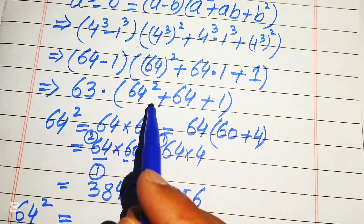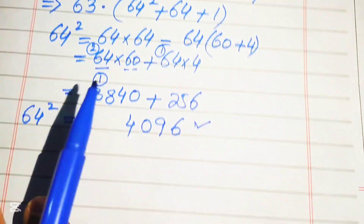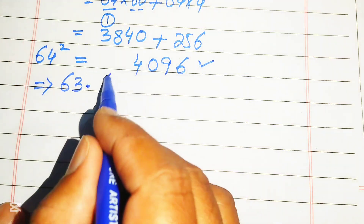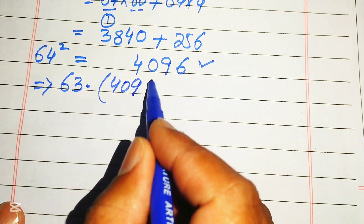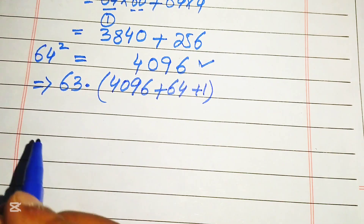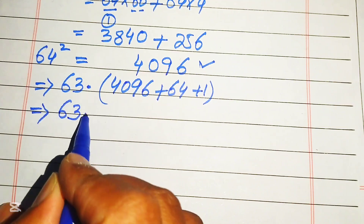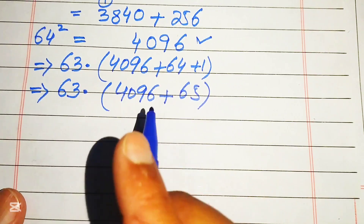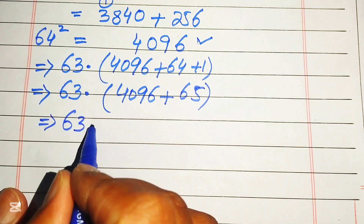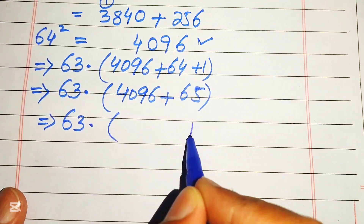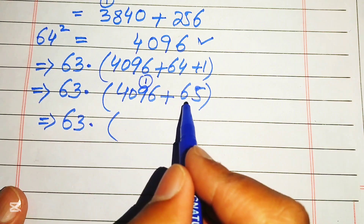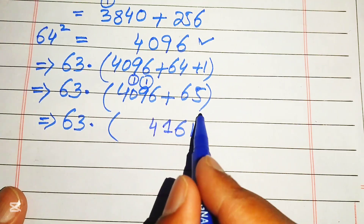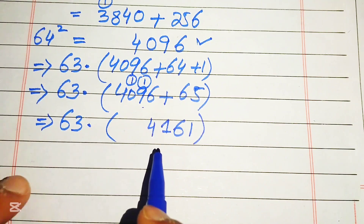We substitute 64 squared equals 4096 back into the expression: 63 times of 4096 plus 64 plus 1. Adding 4096 plus 64 plus 1: 6 plus 5 is 11, write 1 carry 1; 9 plus 6 is 15, plus 1 is 16, write 6 carry 1; 1 plus 0 plus 1 gives 4. So 4096 plus 64 plus 1 equals 4161.